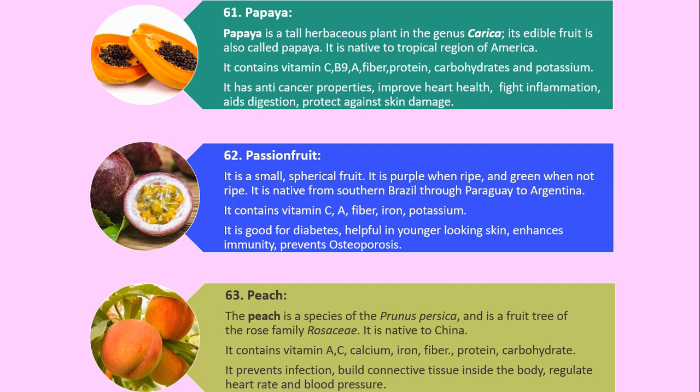Number 62. Passion fruit. It is a small, spherical fruit. It is purple when ripe and green when not ripe. It is native from southern Brazil through Paraguay to Argentina. It contains vitamin C, A, fiber, iron and potassium. It is good for diabetes, helpful for younger looking skin, enhances immunity, and prevents osteoporosis.